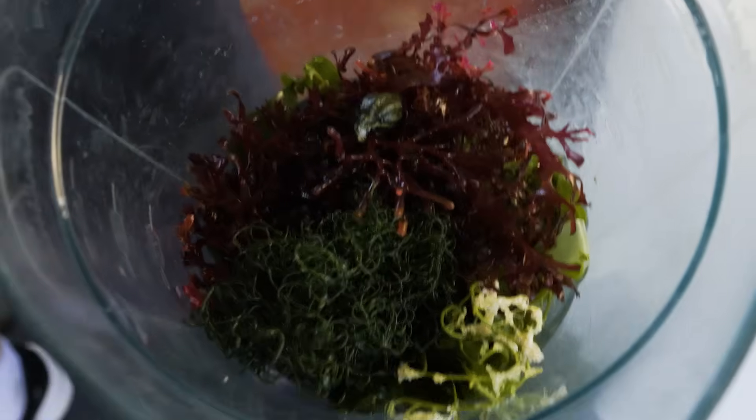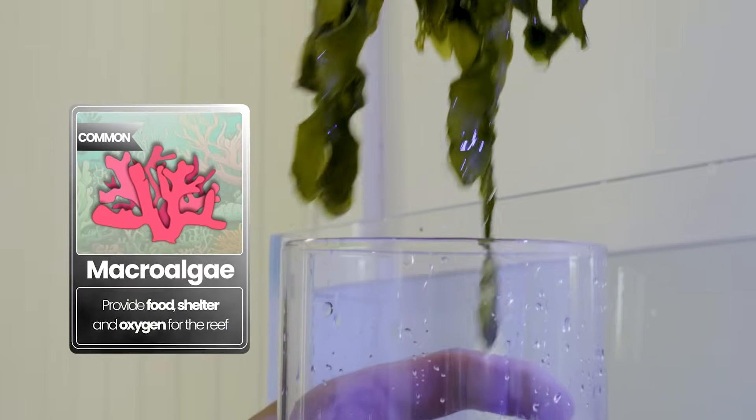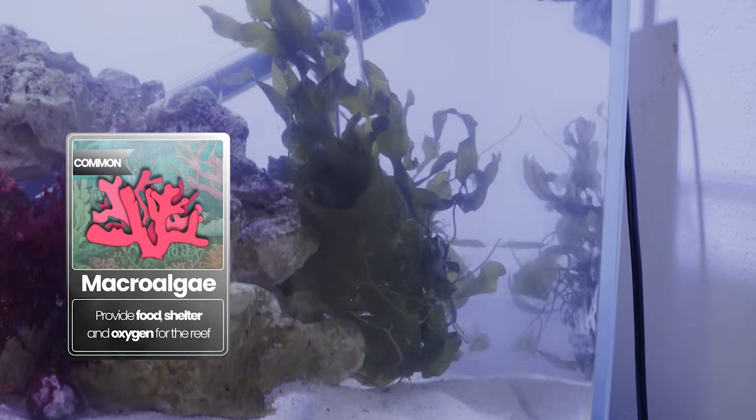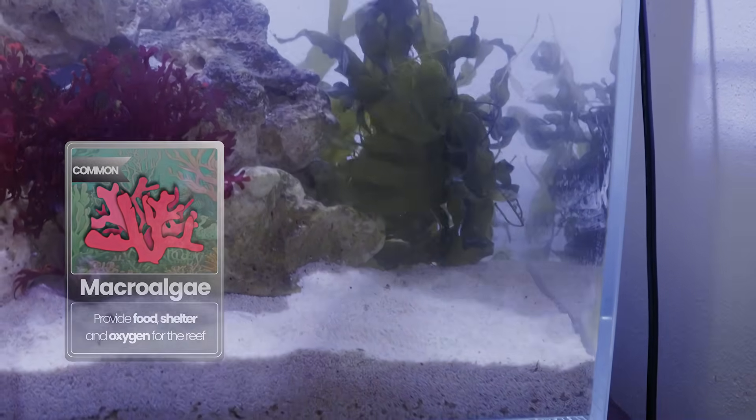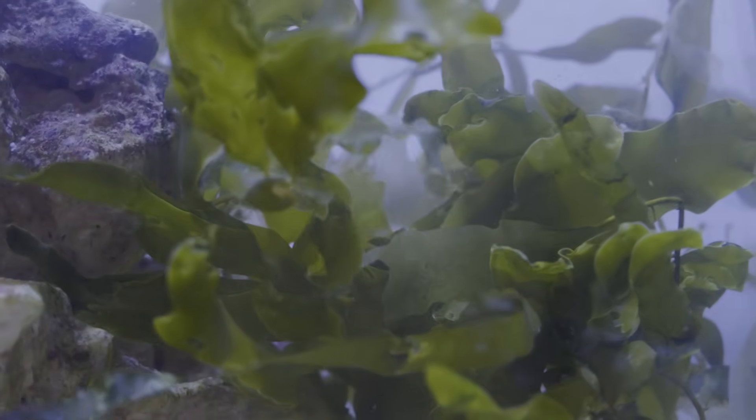After giving our new friends some time to settle in, it was finally time to add some color into the tank. These are macroalgae, or as you probably know it, seaweed. These will grow in a beautiful variety of colors and provide shelter and clean the tank by absorbing waste. When they weren't floating away, that is.